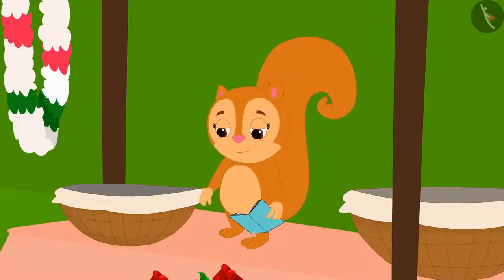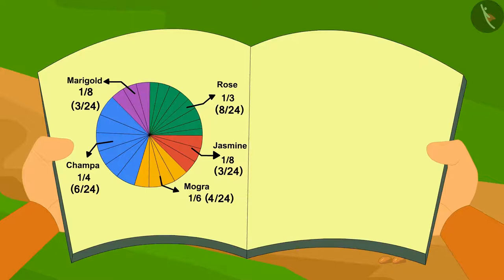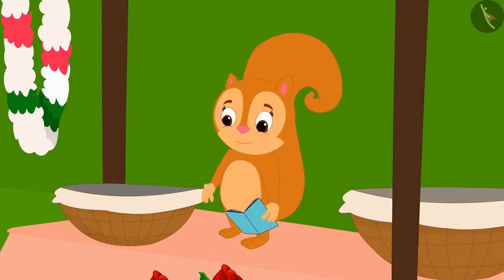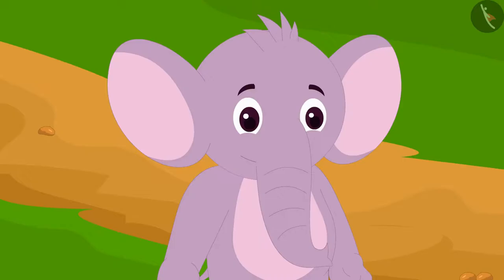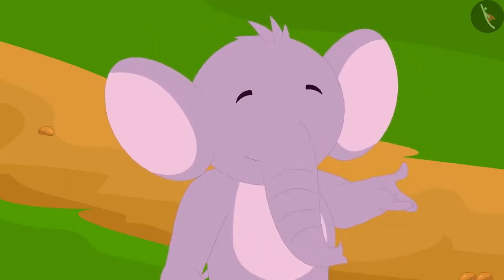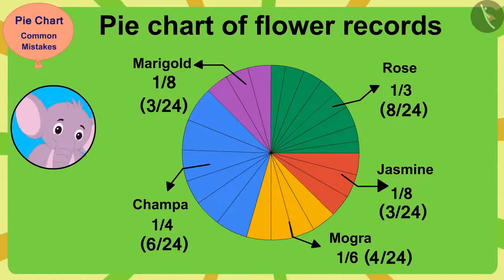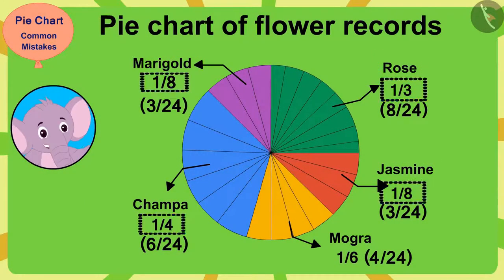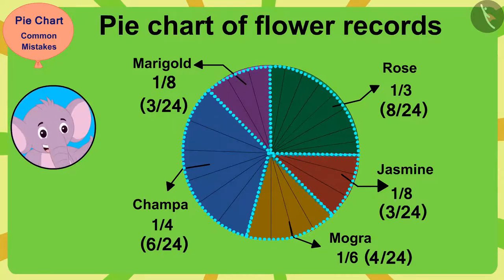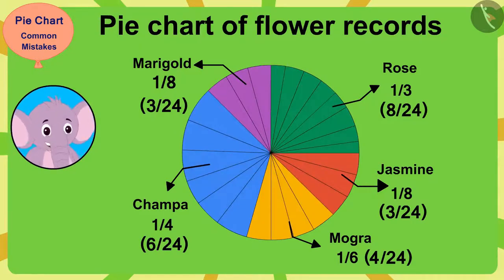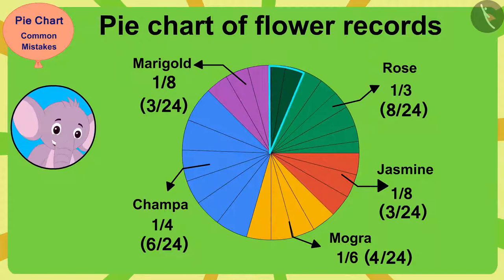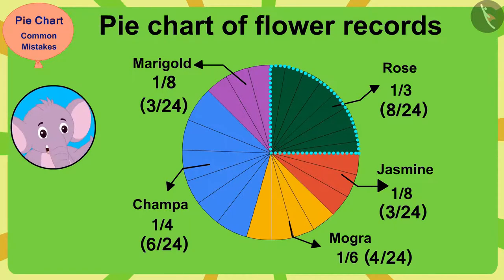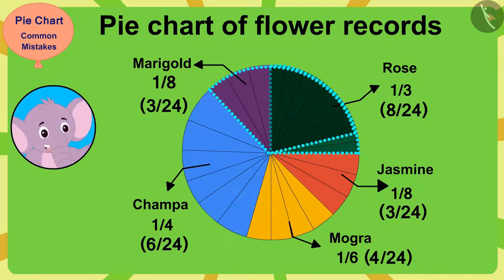Oh yes, Appu. When I made this pie chart, I counted properly. I had counted each flower and then colored in the parts of the pie. Then how did this happen? Okay, now I understand. Look Chanda, even though you have colored the parts of the pie chart according to the fractions of these flowers, when you made the parts of the pie chart, you created unequal parts instead of equal parts. So 1/3rd of your pie chart seems smaller than the 1/4th of your pie chart.